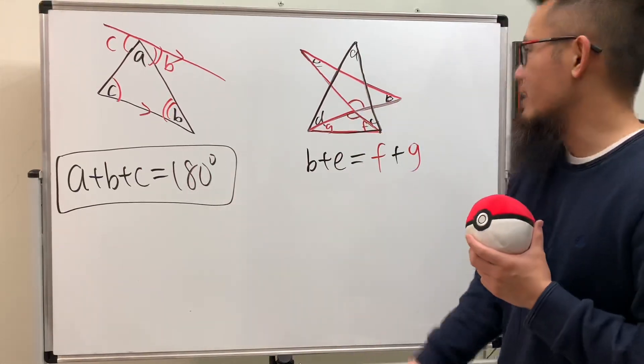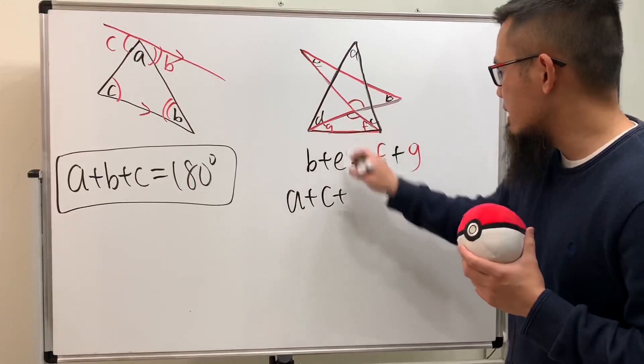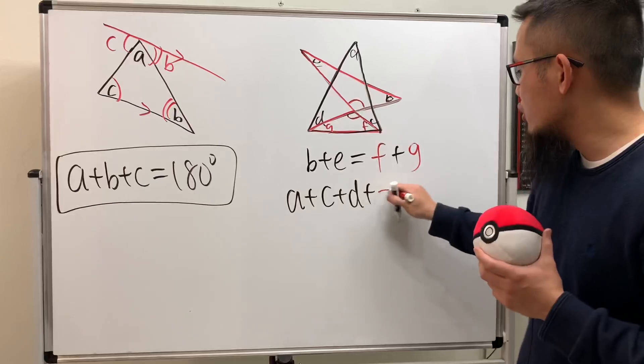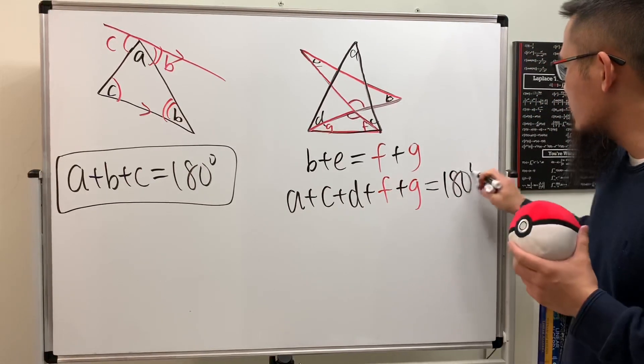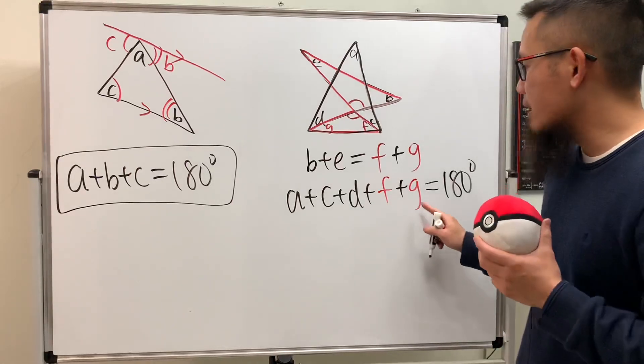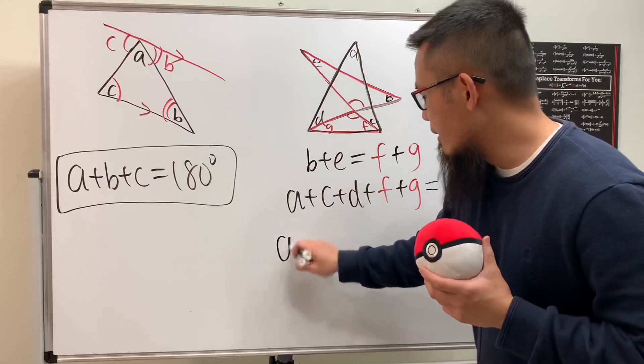So let's put that down. We have a plus c plus d, and of course we have the f and g right here. Altogether everybody will add up to 180 degrees. Very nice. But what's f plus g? Yes, that's just b plus e. So altogether we just put down a plus b and then plus c and then plus d and then lastly we have the e right here.